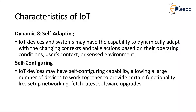Characteristics of IoT: First, IoT devices and systems may have the capability to dynamically adapt with changing context and take actions based on their operating conditions, usage context, or changes to environment. For example, surveillance cameras can adapt their modes — from normal to infrared — based on day and night. Cameras could switch from lower to higher resolution mode when motion is detected, and alert nearby cameras to do the same. In this example, the surveillance system adapts itself based on dynamic conditions such as whether it is day or night.